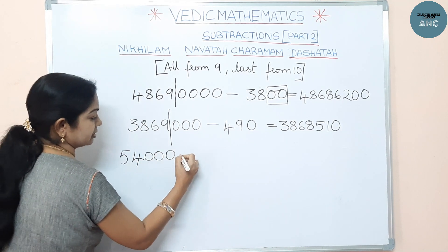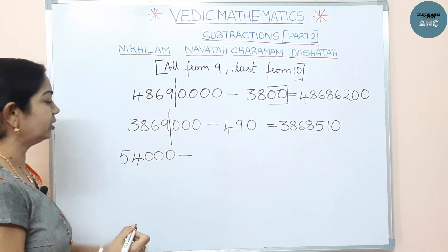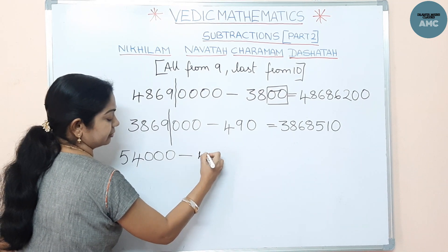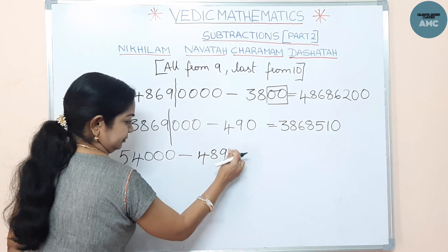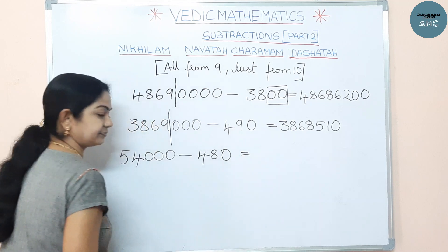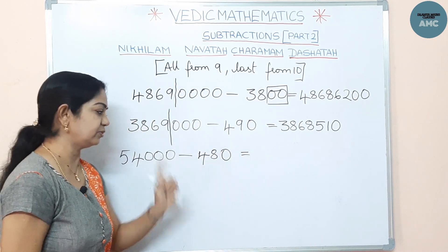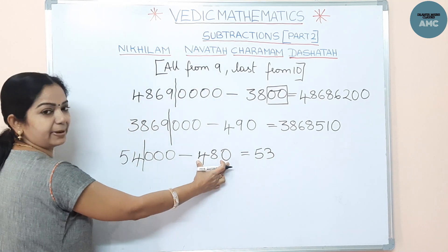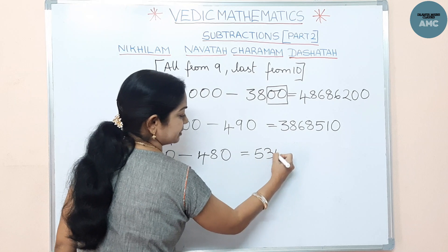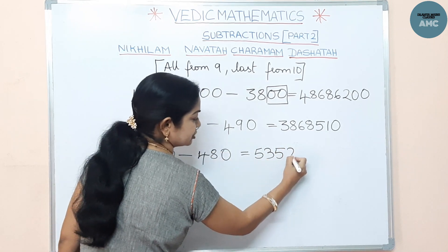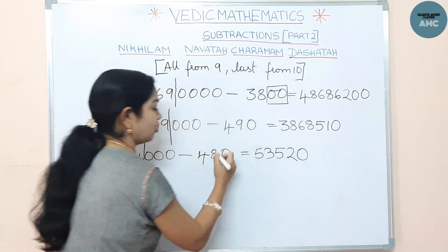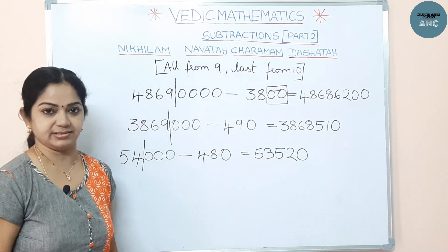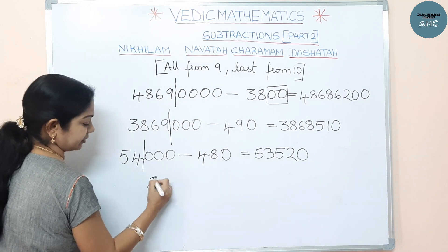Another example: 5,400,000 minus 480. When the subtrahend has zeros, ignore them temporarily. Make the partition, reduce the first part: 54 becomes 53. Apply Nikhilam to the number part only: 9-4=5, 10-8=2. Then carry the zero from the subtrahend over to the answer. Always remember to include the zeros in the final answer.